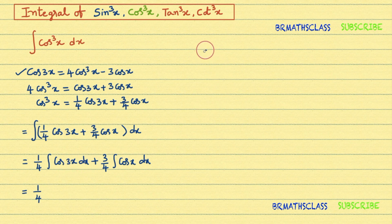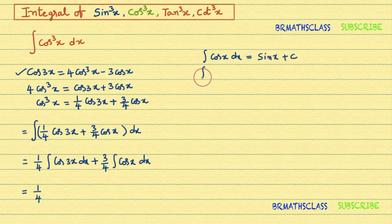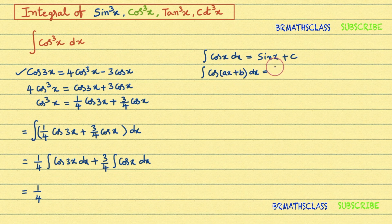We know the integral of cosx dx formula: the integral of cosx dx equals sinx + c. This was already covered in integration by substitution. In place of x, if ax + b is present, we write the answer directly as 1 divided by the coefficient of x, times sin(ax + b) + c. So the integral of cos(ax + b) dx = (1/a)sin(ax + b) + c.